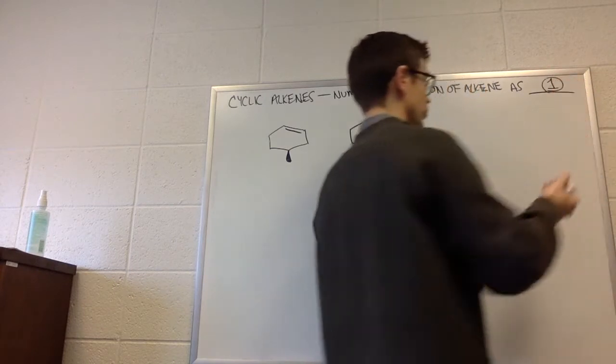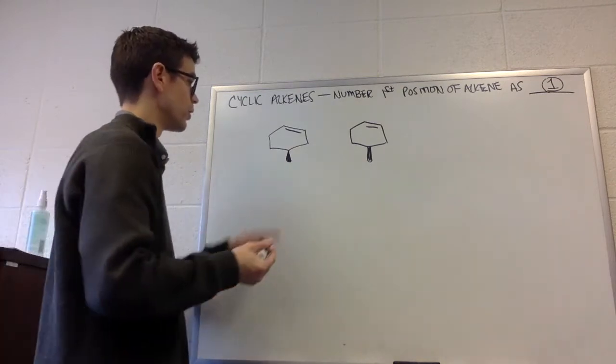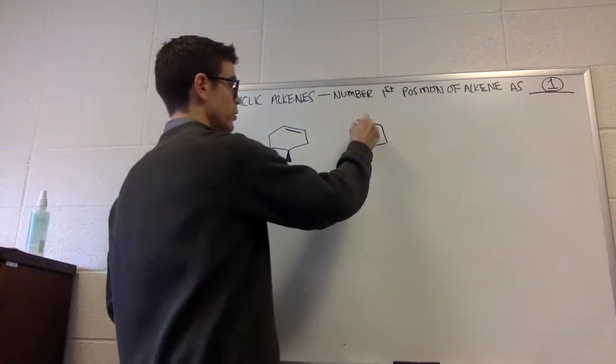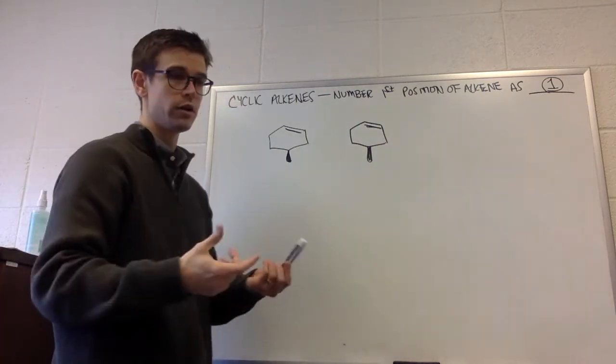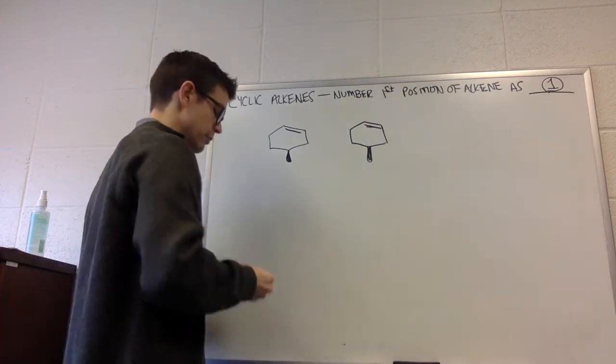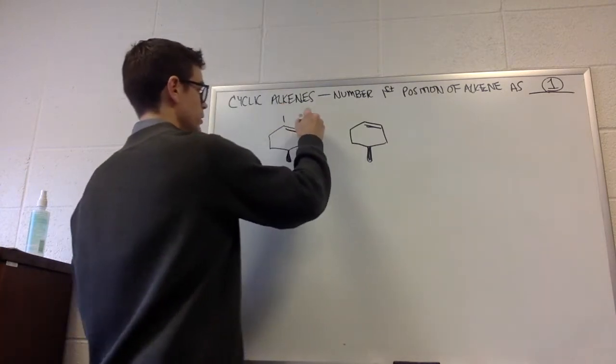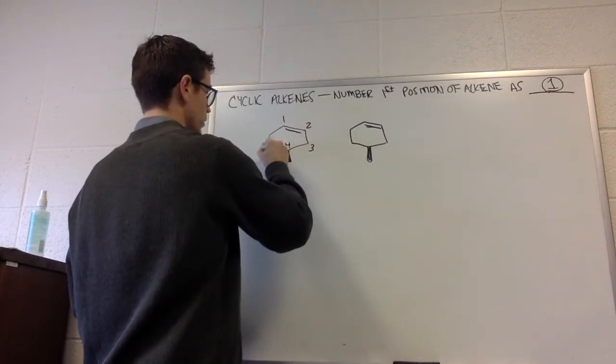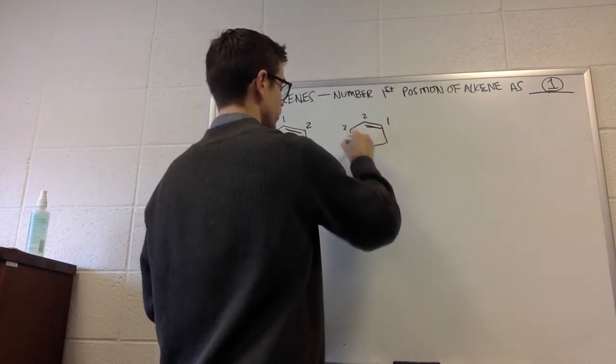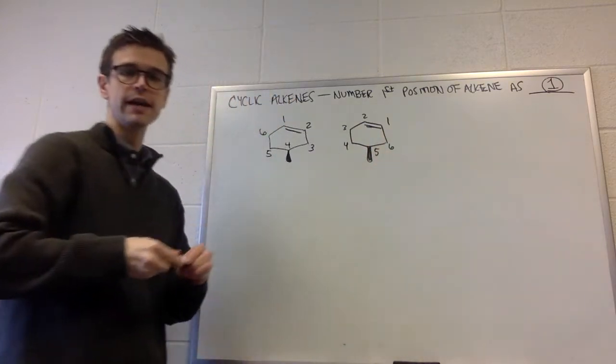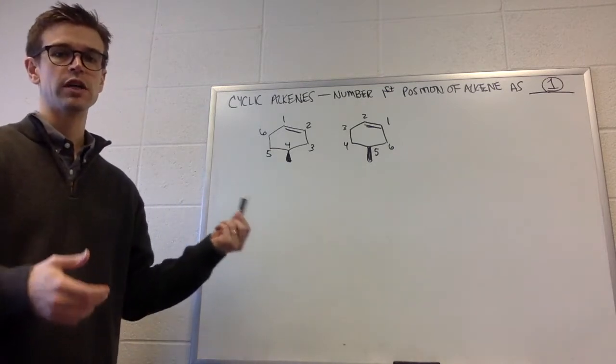So the ring, wherever the first position of the alkene is, is going to be made number one. Here is the same molecule twice, and I'm going to number it with one of the positions of the alkene as one, and then we'll think about which one is better. So I can either number this 1, 2, 3, 4, 5, 6, or 1, 2, 3, 4, 5, 6. In both cases, one of the two positions of the alkene is number one, but one of these is correct and the other is not correct.